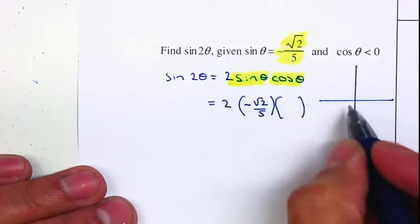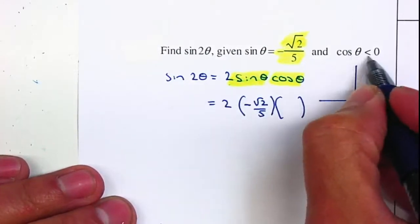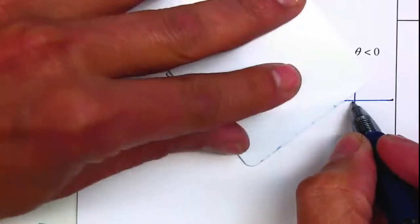Sine is negative, so that's your y-axis, so it can be either of those two quadrants. But because cosine is also negative, it has to be in quadrant number 3.